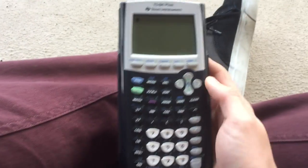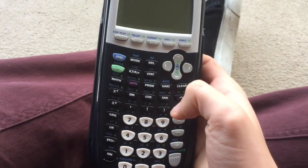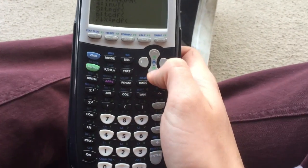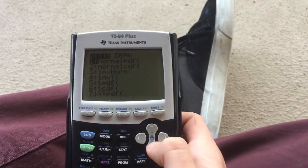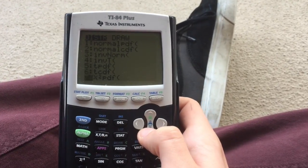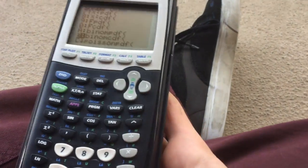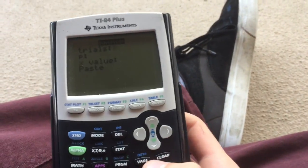So this is how you get to the binom CDF on your calculator. You first have to press distribution. You press second, then distribution. You get this. You scroll down to binom CDF.